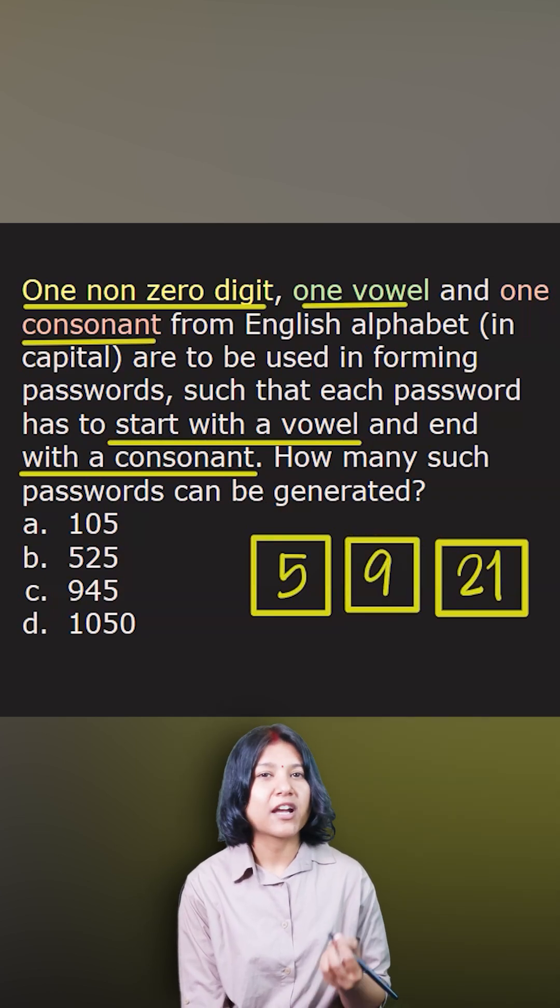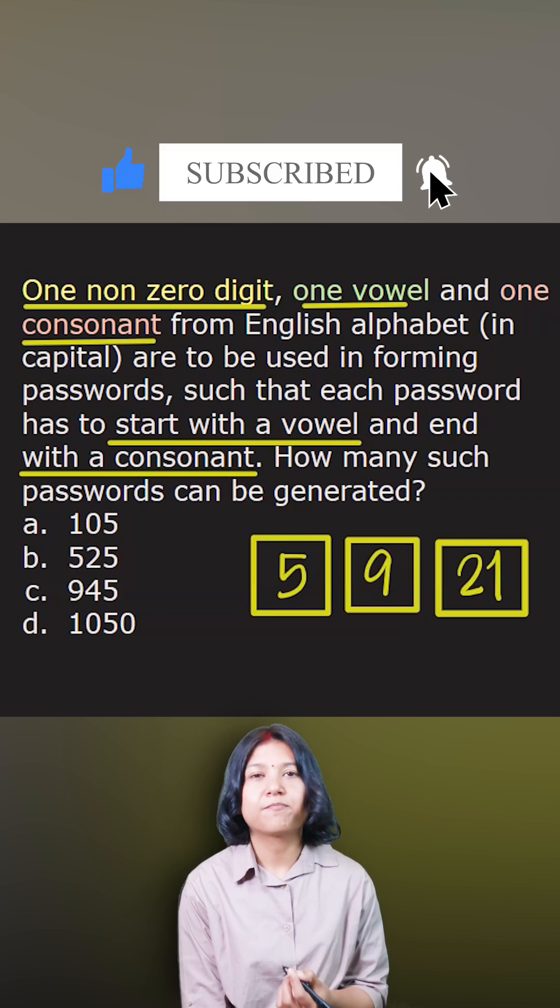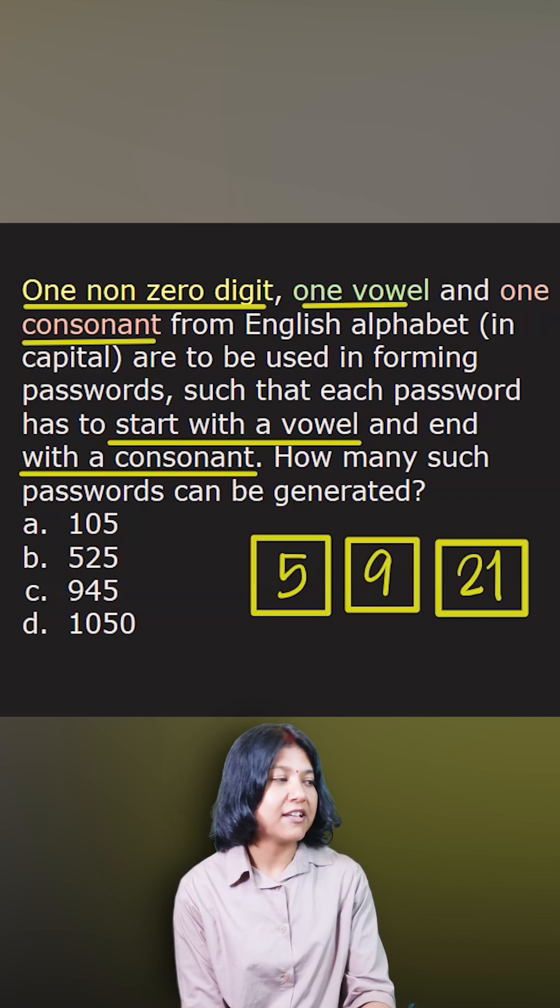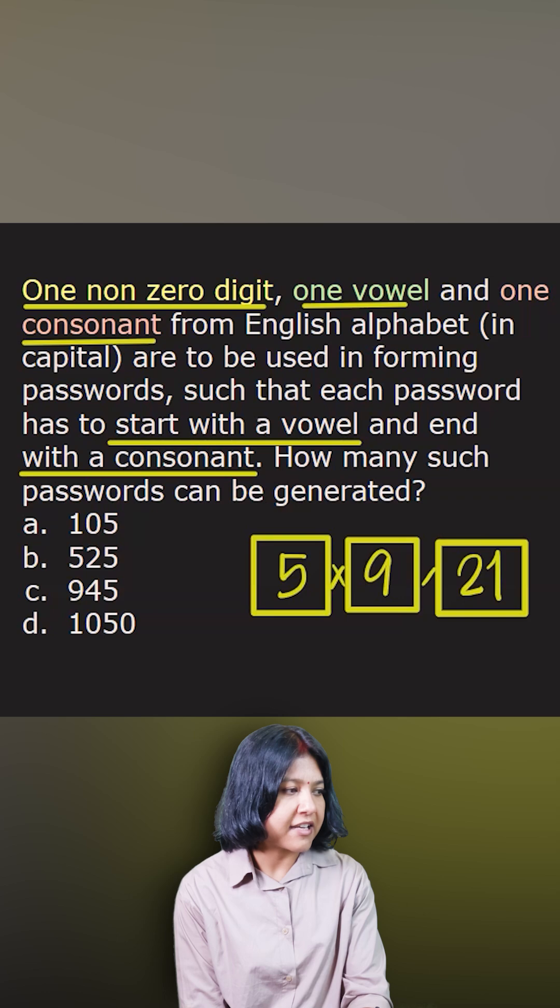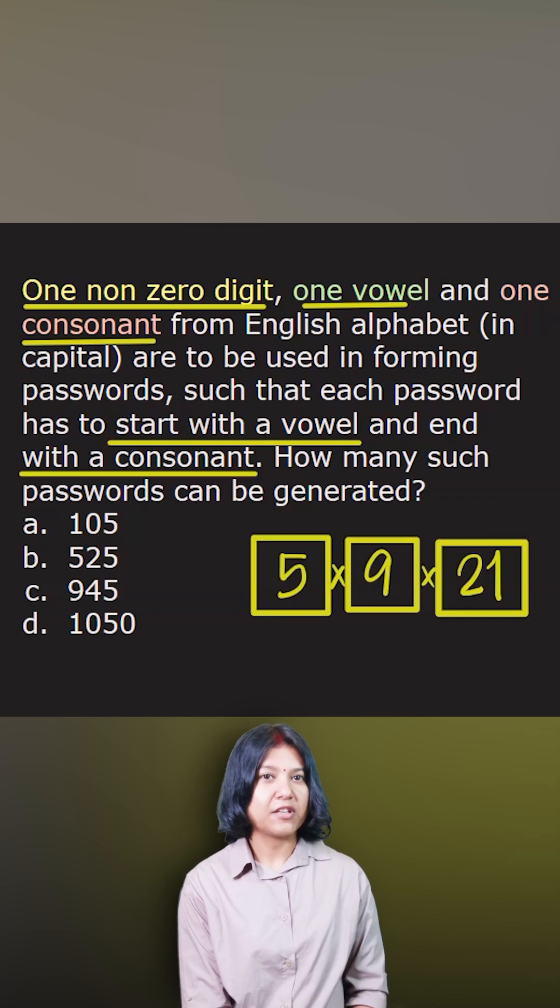What you have to do - because you have so many options in each place, the total number of passwords generated would simply be the product of the three values we got, or the options that we got. We wrote their numbers and we just have to multiply them.